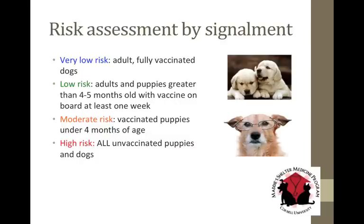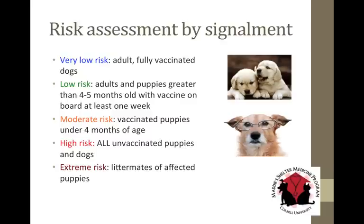A good question from the audience: do you look at whether an animal is altered? Yes, and there is data to support it. One prevalence study found that 100% of altered animals entering shelters had protective antibodies for distemper and parvo, suggesting altered animals are likely low risk because they've probably had at least one vaccine. Extreme risk by signalment: littermates of affected puppies or kittens — absolutely extreme high risk.